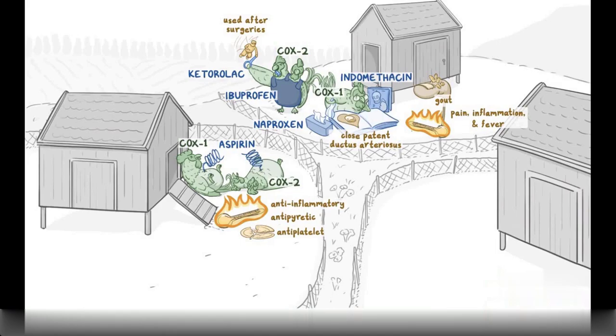The last coop only has one rooster, and it's alive, and it's got two heads. So this is where we put the reversible selective COX-2 inhibitors.